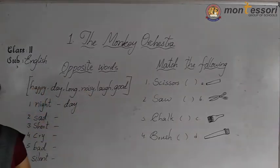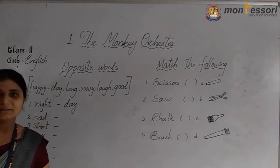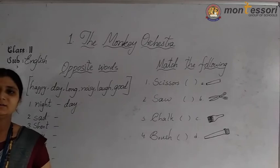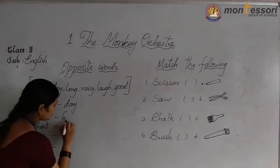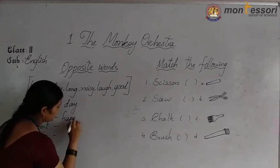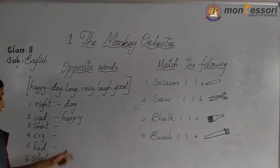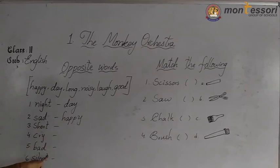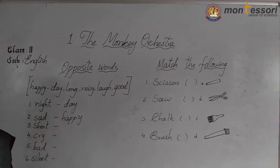Sad — sad means being dull. What is the opposite of sad? Happy. Opposite of sad is happy. My dear children, these four you have to solve: short, cry, bad, and silent. I have solved two for you — these four you have to solve.